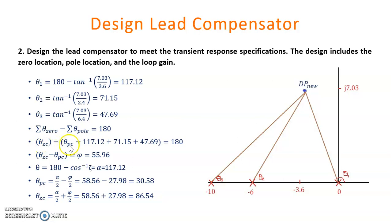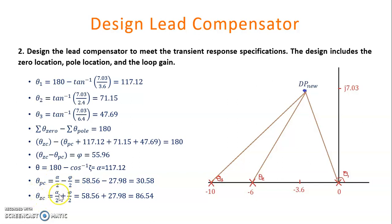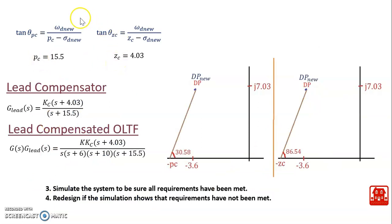Here, theta_zc and theta_pc represent the zero location and pole location for the lead compensator. Using this equation, we determine that theta_zc minus theta_pc, represented by phi, equals 55.96 degrees. Based on the damping ratio value, we also determine theta equal to 117.12 degrees, which equals alpha. To find theta_pc and theta_zc, we use: alpha divided by 2 minus phi divided by 2 equals theta_pc, and alpha divided by 2 plus phi divided by 2 equals theta_zc. Based on these two angles, we determine the locations of pc and zc for the lead compensator.